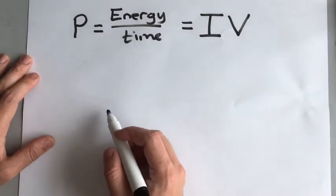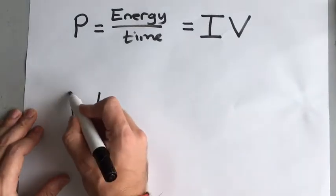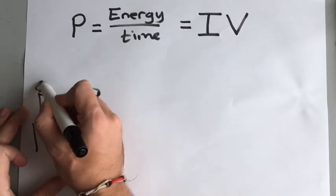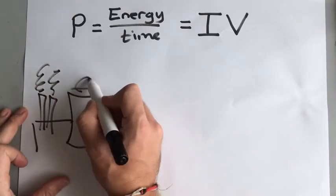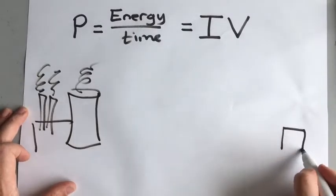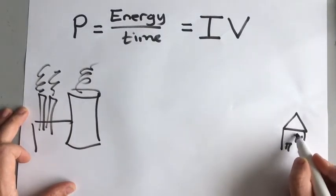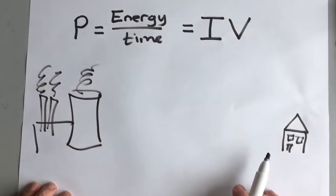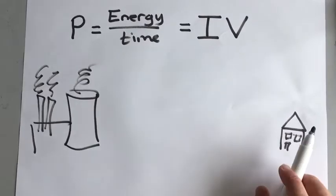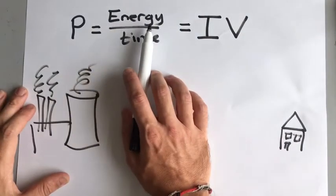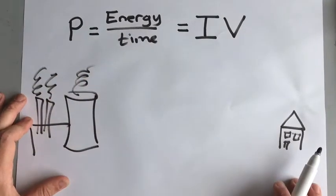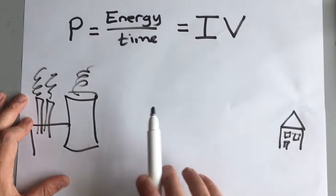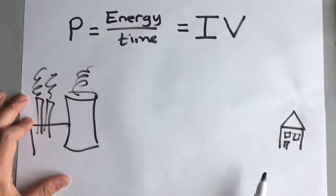When we transmit electricity from a power station all the way to our homes, we transmit it sometimes very long distances. We want to transfer the same amount of energy in the same amount of time, so we need to keep that power constant. We need to keep the power leaving the power station the same as the power that arrives in our homes.